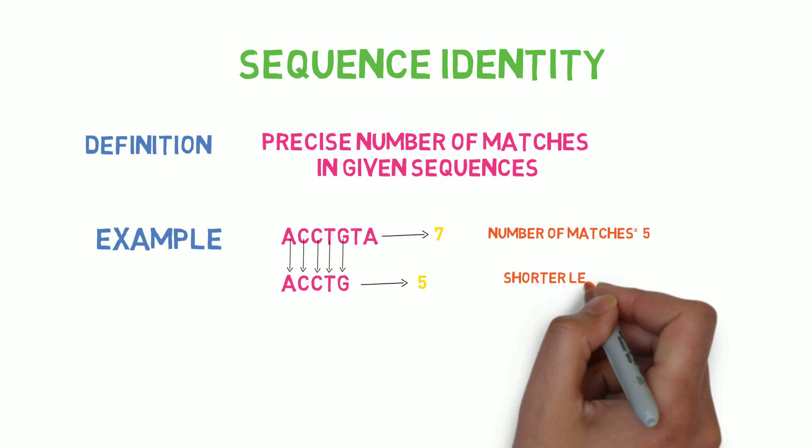Consequently, choose the shorter length of 5. The identity should then be calculated using the straightforward formula below. This time, it is 100%.